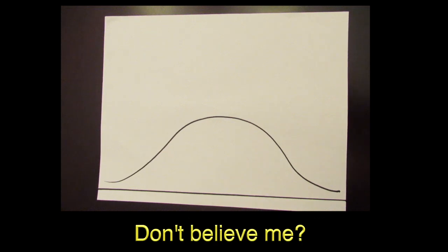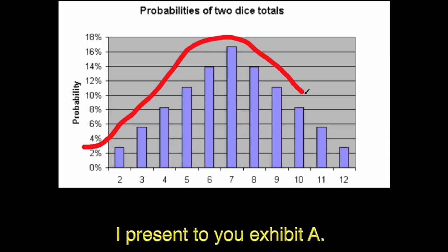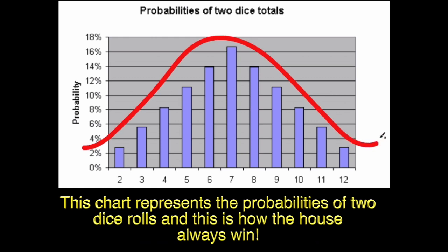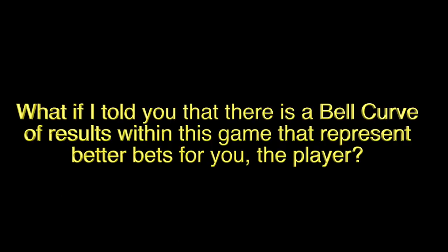Don't believe me? I present you with exhibit A. This chart represents the probabilities of two dice rolls and this is how the house always wins. What if I told you that there is a bell curve of results within this game that represent better bets for you, the player? Let me explain.